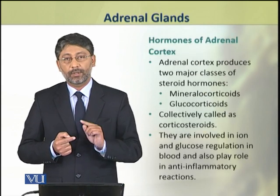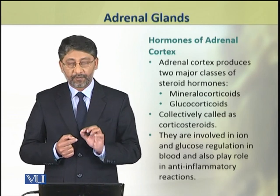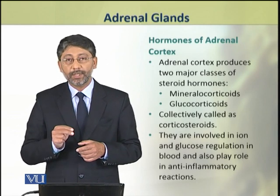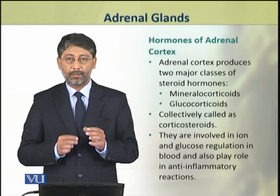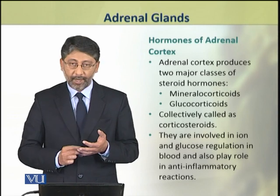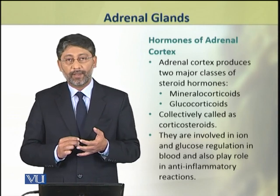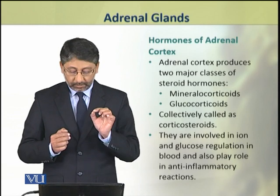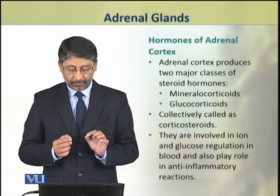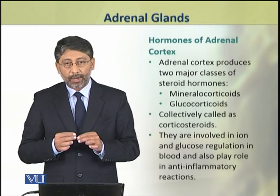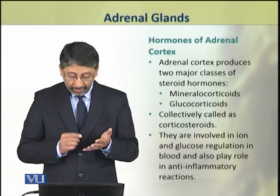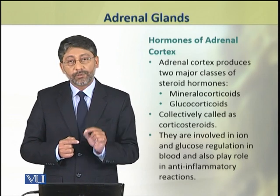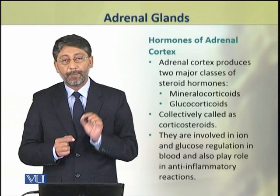Dear students, now we shall discuss the hormones of adrenal cortex. Adrenal cortex produces two major classes of steroid hormones: one are called glucocorticoids and the others are known as mineralocorticoids. Collectively, these two classes are called corticosteroids. These corticosteroids are involved in ion and glucose regulation in blood, and they are also involved in anti-inflammatory reactions.